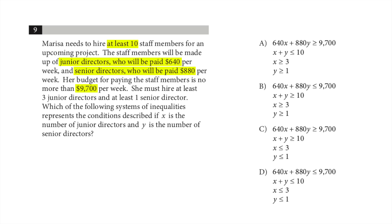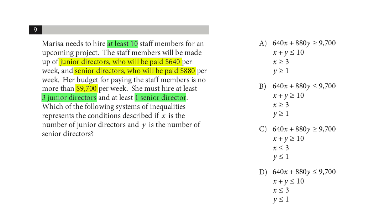She must hire at least three junior directors and at least one senior director. Which of the following systems of inequalities represents the conditions described if X is the number of junior directors and Y is the number of senior directors? It's totally straightforward: X needs to be more than three, Y needs to be more than one. She has to hire at least 10 staff members, so combined it has to be more than 10, and the total amount of money spent has to be less than $9,700.